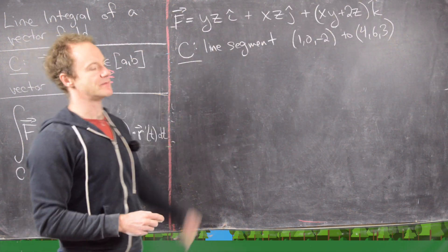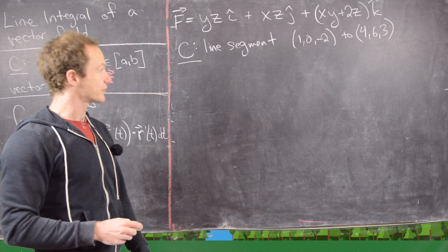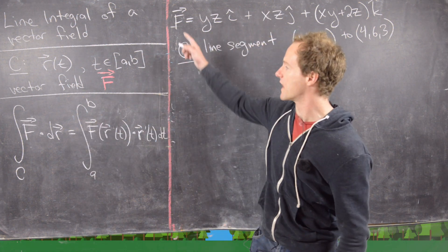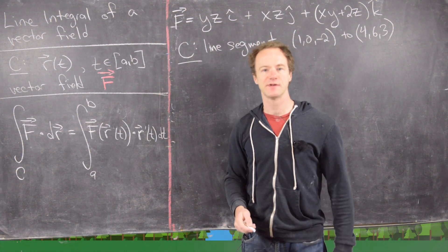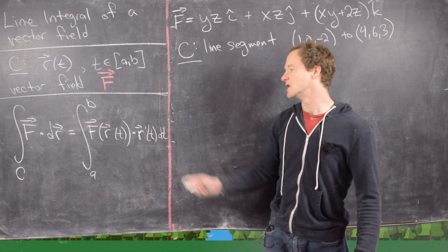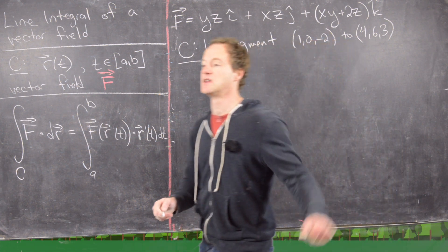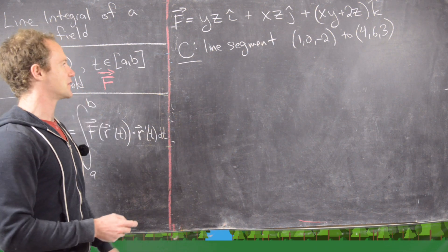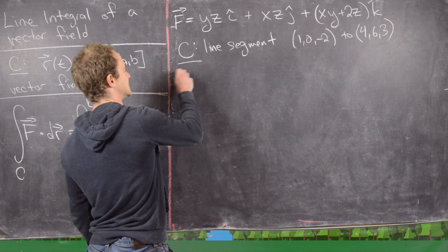We'll do one more example: the line integral of a vector field in R³ over a line segment. During the derivation we never specified two or three dimensions — we worked in an arbitrary number of dimensions. That means we can apply this formula to any dimension immediately.